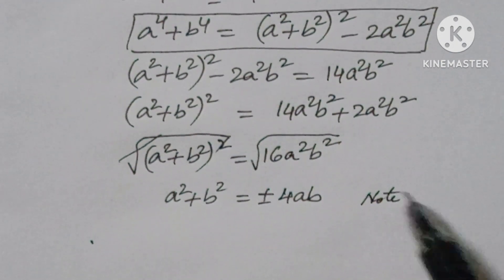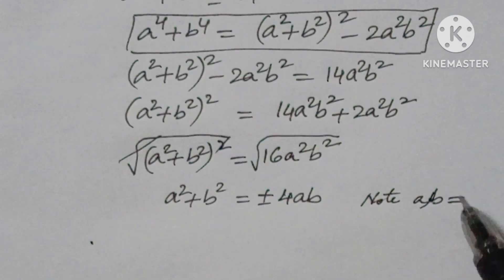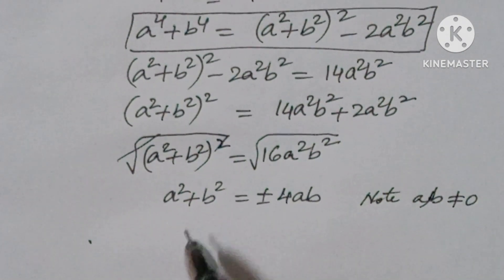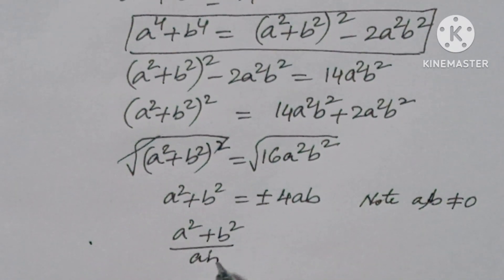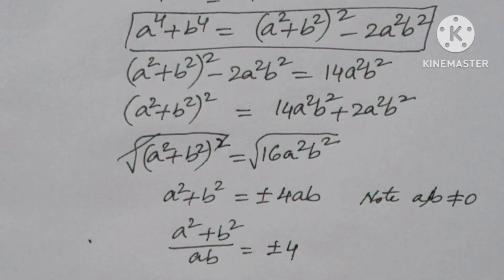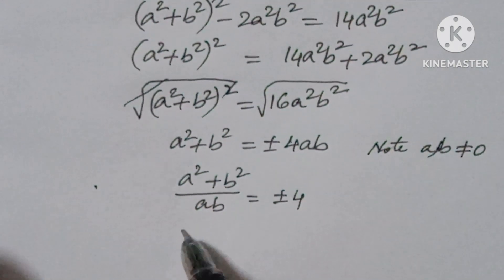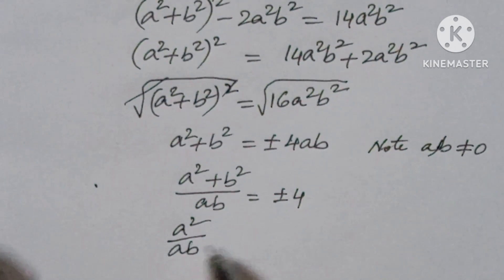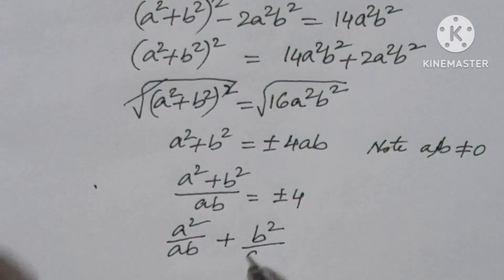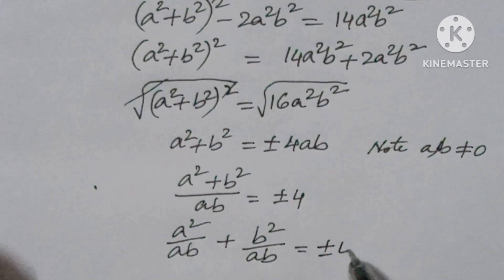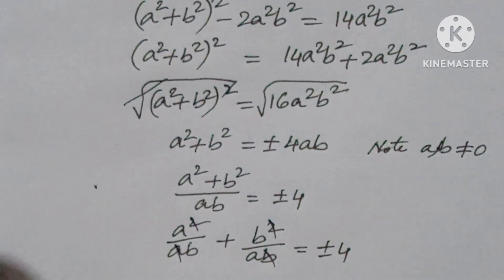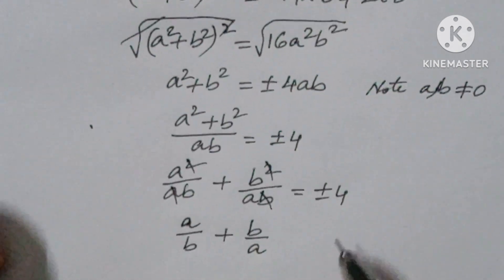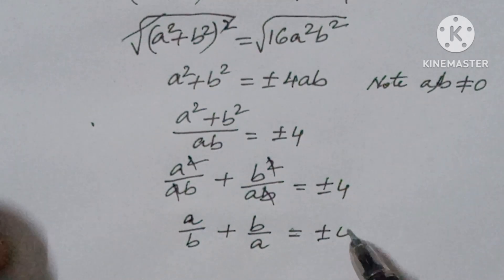Note that a, b are not equal to 0. Now, dividing both sides by ab individually — a² over ab plus b² over ab equals plus or minus 4ab over ab — the ab cancels, giving us a over b plus b over a equals plus or minus 4.